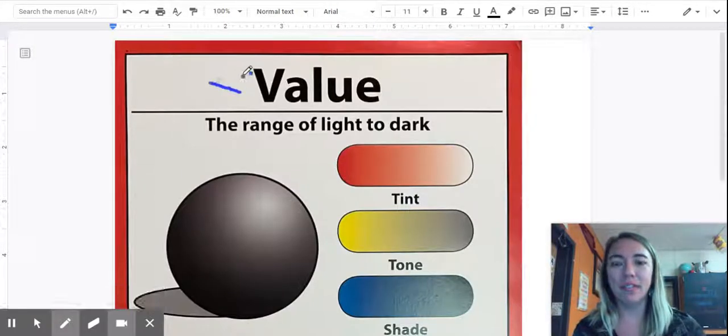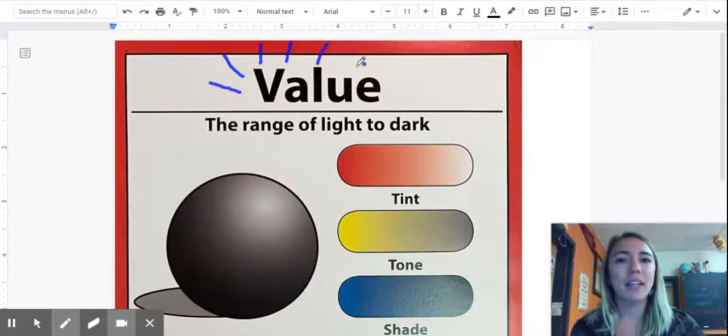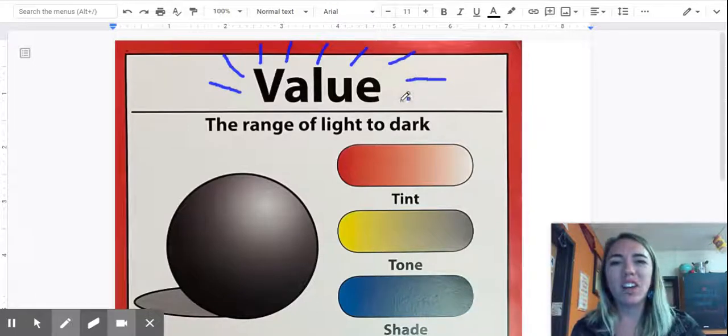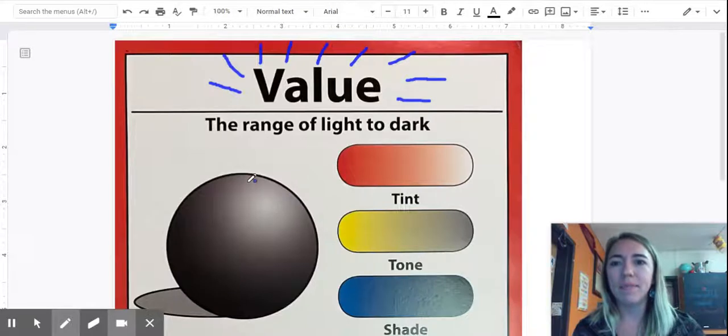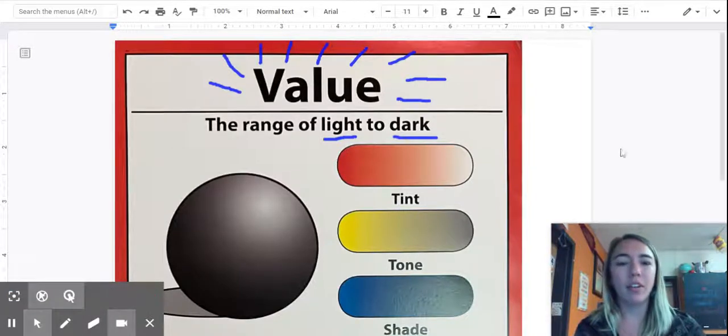So value is an element of design. It's an ingredient that we use in our artwork to make things look interesting and to add some different qualities. Value is the range of lightness to darkness and there's lots of ways that we can create value.